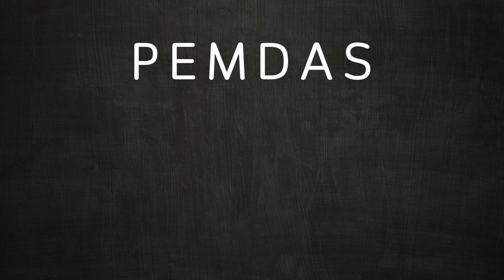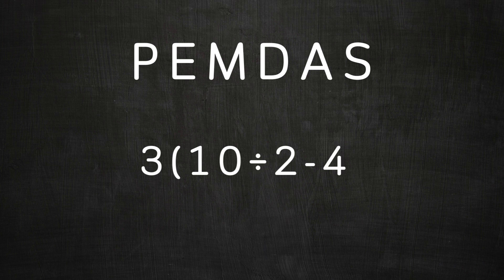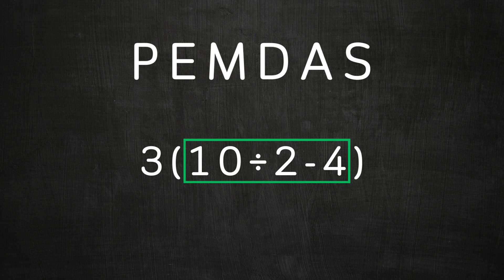Let's start to go through PEMDAS. First we have P, parenthesis. For example, if we have a problem like 3 times parenthesis 10 divided by 2 minus 4, then we have to do what's inside the parenthesis first.